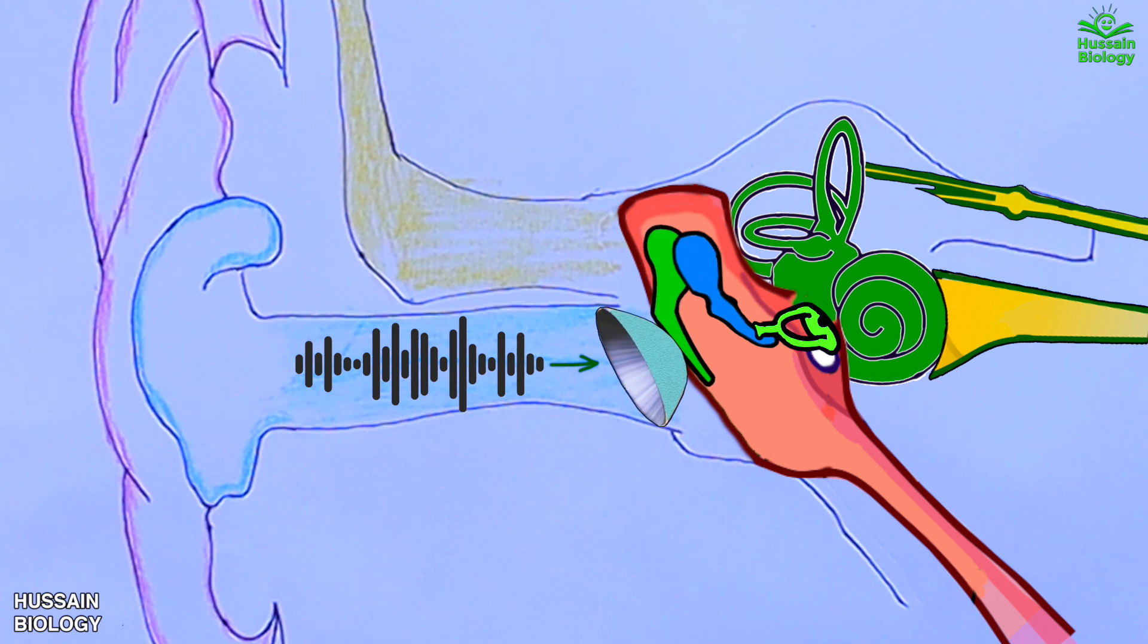The first ossicle to receive the sound wave is the malleus bone. It transmits the sound vibrations from eardrum to the incus, and this incus then transmits vibrations to the stapes, which ultimately sends the sound energy to the inner ear through oval window.